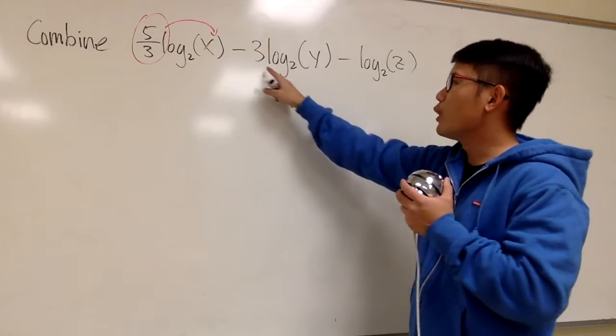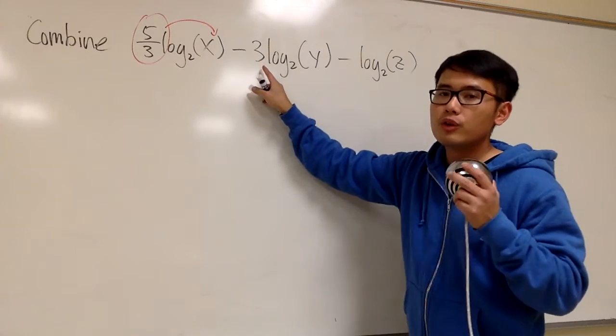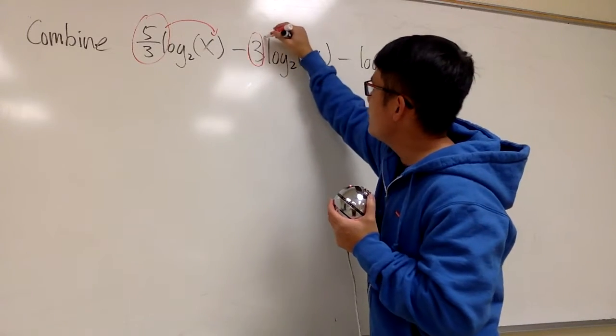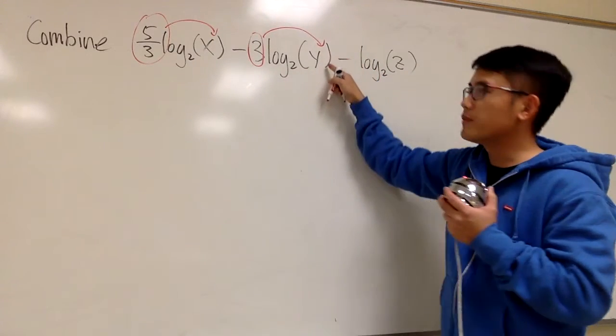And then for the next term, we also see we have the 3. Don't worry about the negative, just the number right here. We will take the 3 and bring that to the exponent for the y.